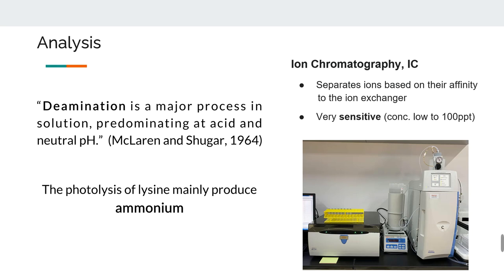Since deamination is the major process in solution, ammonium will be the major nitrogen-bearing product of photolysis. We use IC to measure the concentration of ammonium in our samples. Through analyzing samples taken out at different times, we can figure out how photolysis proceeds over time.